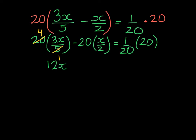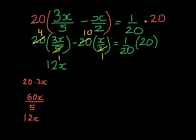If you don't like that move, you could also multiply 20 times 3x to get 60x, and then in the denominator you have 5 — 60 divided by 5 is 12x. 2 goes into 2 once, and into 20 ten times, so that will become negative 10x.